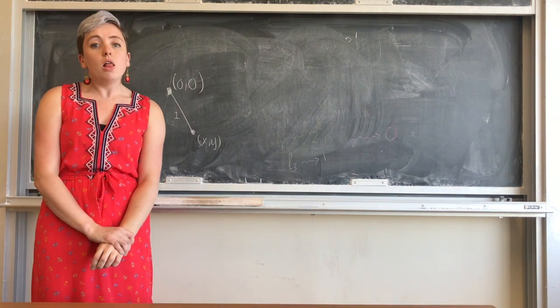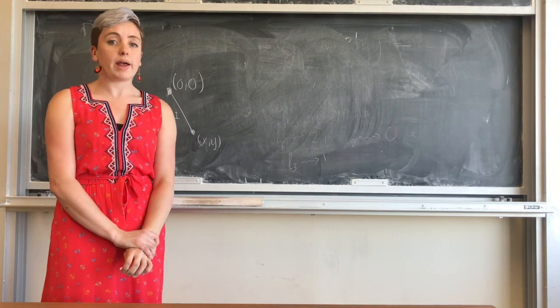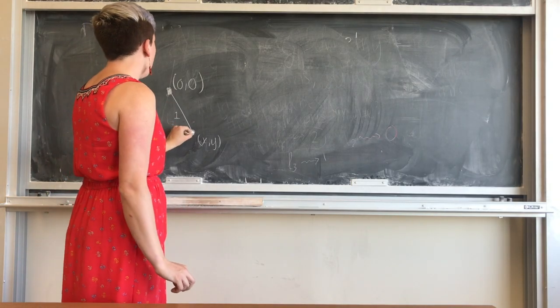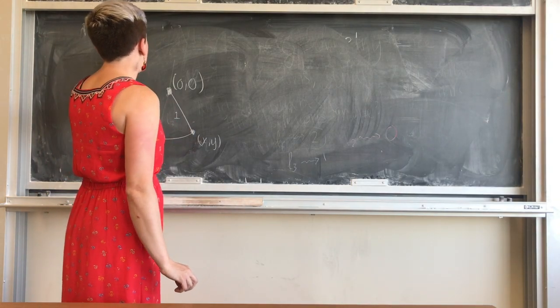But what if I wanted to know all of the points that were distance 1 away from this point? Well, then I would get a circle.